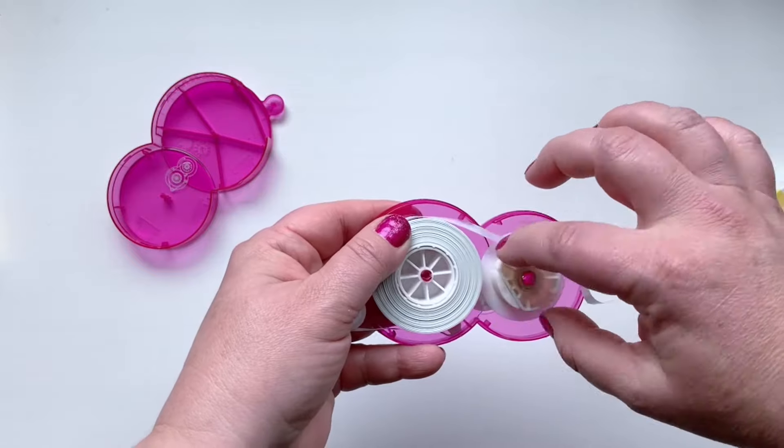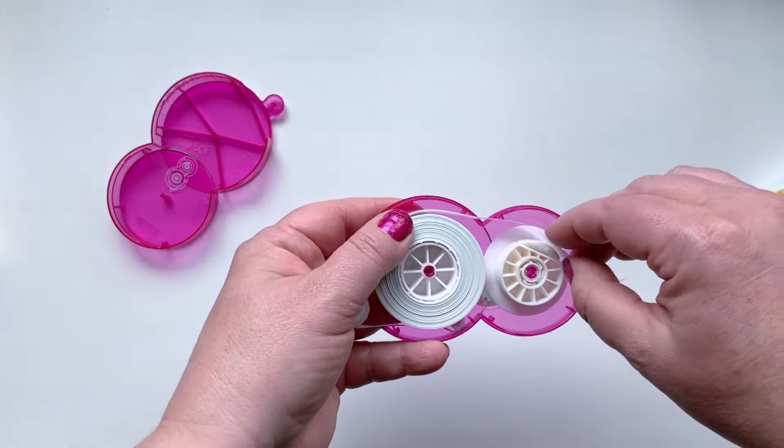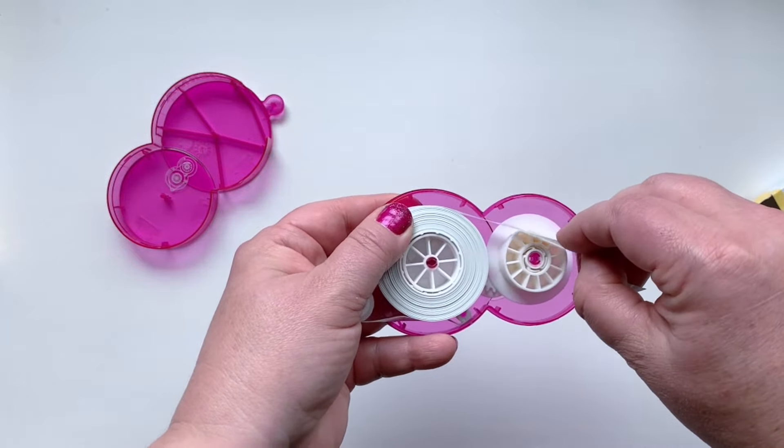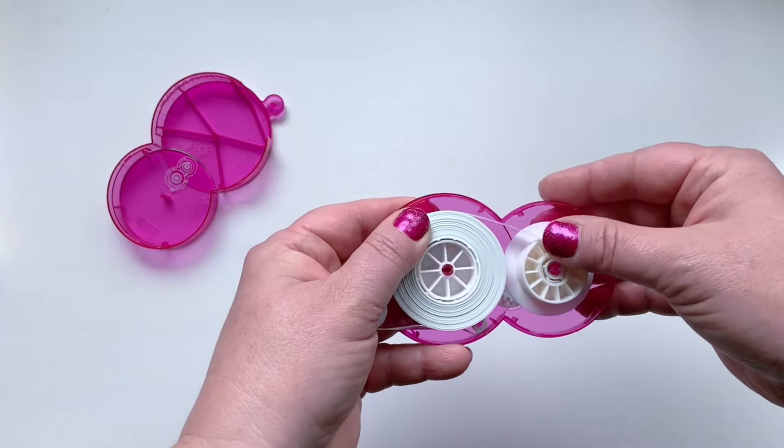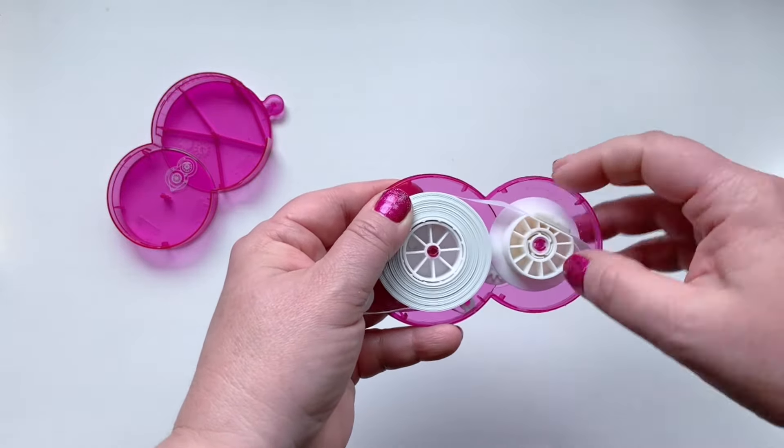Turn the back gear so that the slot in this gear is lined up so you can easily slide that tail right down into that slot.